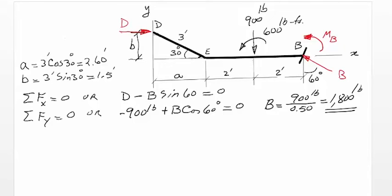Immediately, we can substitute this quantity in the first equation. We get D equal to B times sine of 60 degree. And B is equal to 1,800 pounds. Sine of 60 degree is 0.866 for a magnitude of 1,559 pounds.